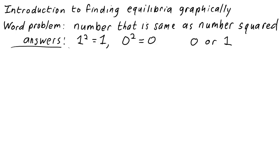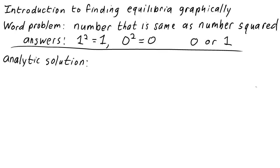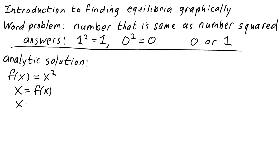But let's imagine that you couldn't figure out the answer to this problem right away. How do we set up a math problem to calculate the answer? One method is to solve this problem analytically — we could write an equation with variables and then solve that equation. Let f be the squaring function, i.e., define f(x) = x². The number x could be the answer to the word problem if x = f(x), i.e., if x = x².